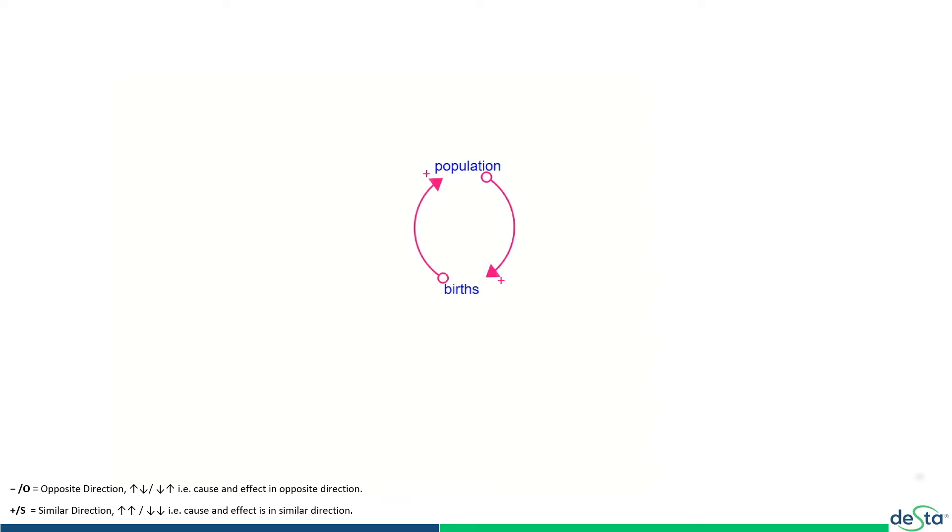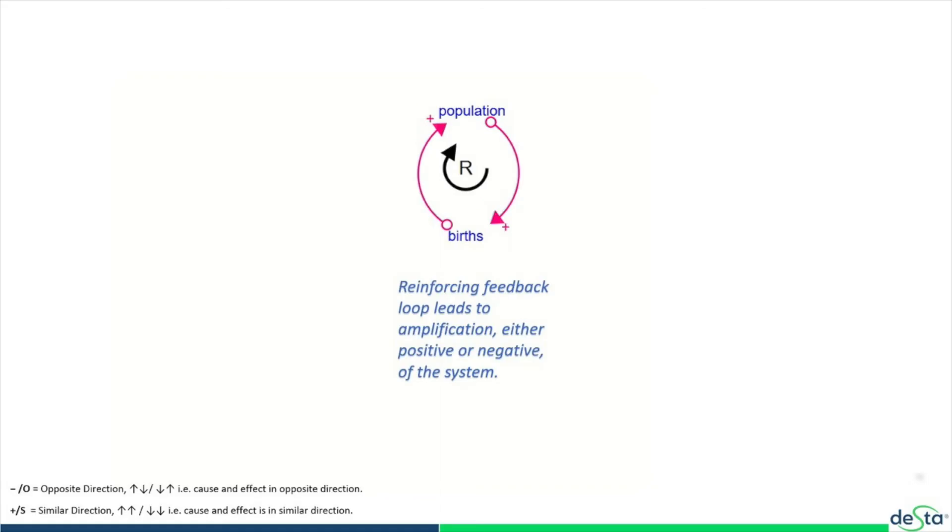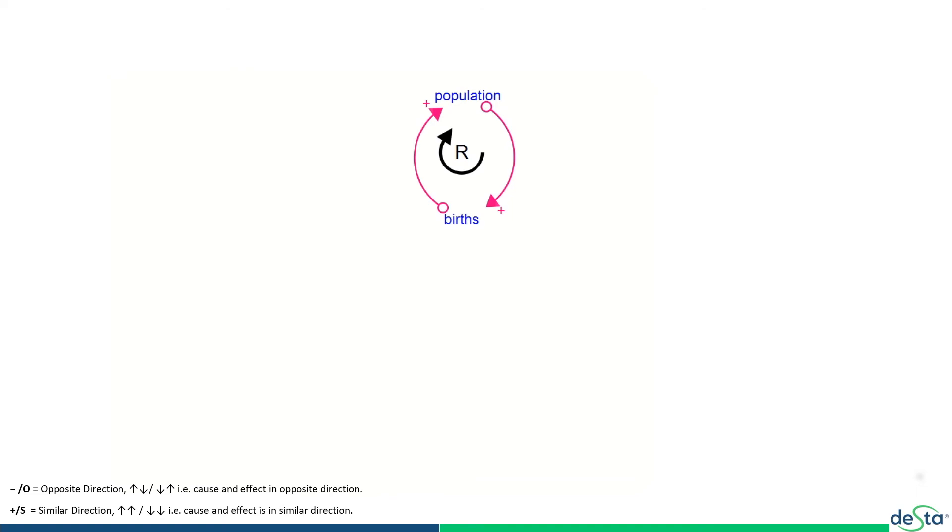But this is not the entire story here. When we talk about feedback loops, there are two kinds of feedback loops. One is the reinforcing feedback loop which amplifies the direction of change, while we also have a balancing feedback loop, which in this case has to do with deaths. People don't just keep...